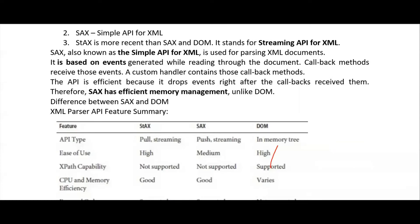SAX stands for Simple API for XML. You also have a recent one called STAX, which stands for Streaming API for XML, and is the most recent one over SAX and DOM. SAX is used for parsing XML documents and it is based on events — events are generated while reading through the document.